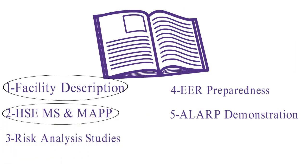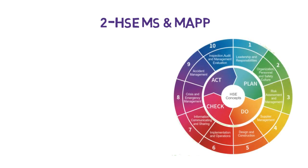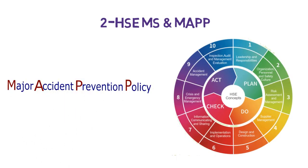Moving to the second part: we describe the company's HSE Management System and the Major Accident Prevention Policy, which includes the company's arrangements and procedures that are being followed to prevent major accidents in accordance with the applicable regulations and standards.